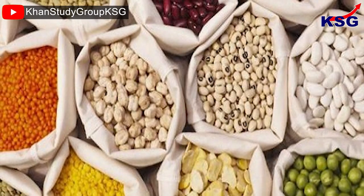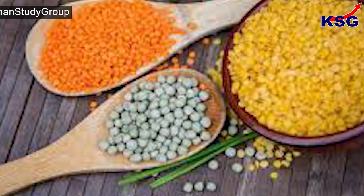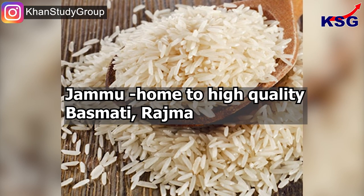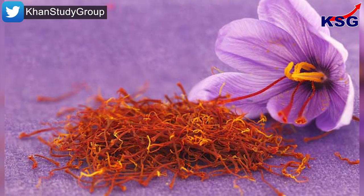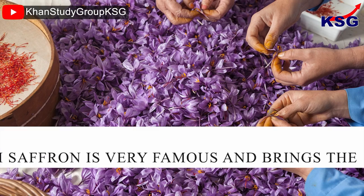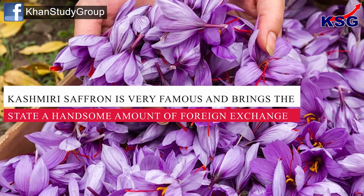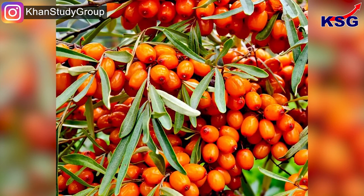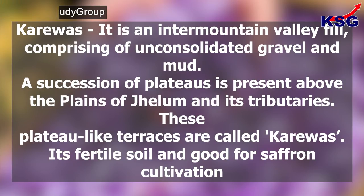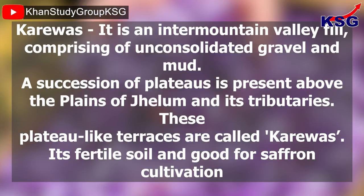The main Kharif crops of the state are rice, maize, pulses, vegetables and fodder, covering 78% of the Net Sown Area. Jammu is home to high-quality basmati and rajma. Kashmir is home to high-quality saffron, zira, fresh and dry temperate fruits and commercial floriculture — Kashmiri saffron is very famous and brings the state a handsome amount of foreign exchange. Ladakh is home to high-quality apricots and sea buckthorn berry. Baramulla is the leading apple-growing district. Karewas is an intermountain valley fill comprising unconsolidated gravel and mud; these plateau-like terraces are called Karewas and their fertile soil is good for saffron cultivation.